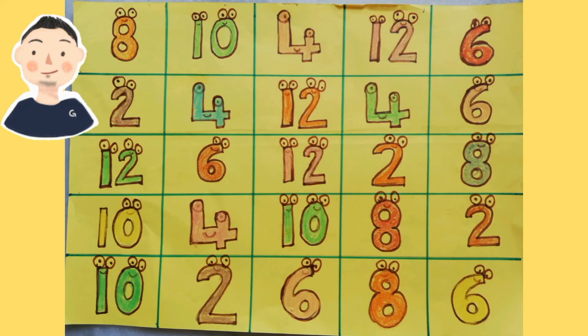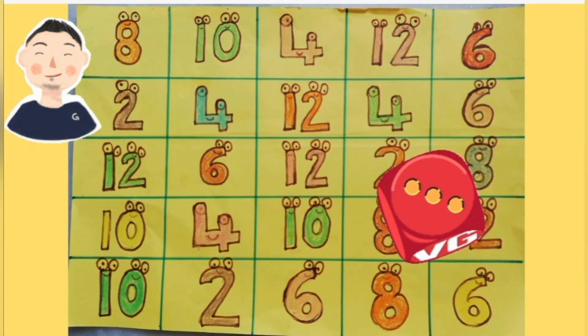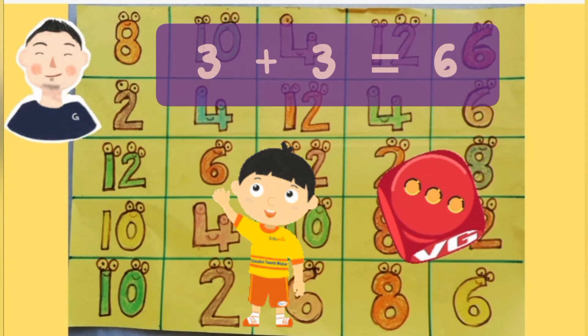My turn. It's three. Can you please let me know the double of three? I know, it's very easy. The answer is six.